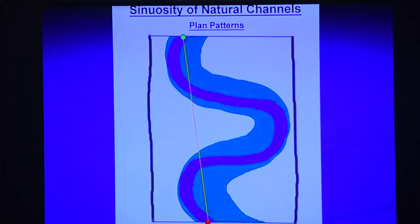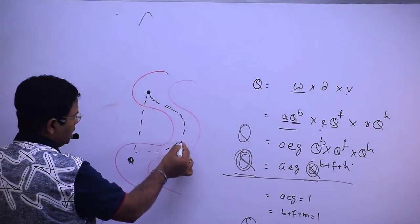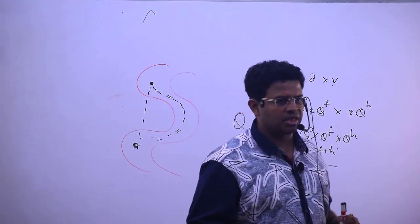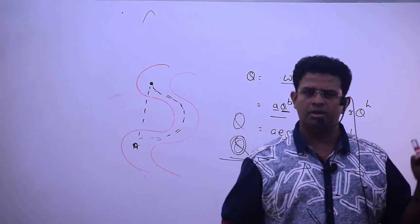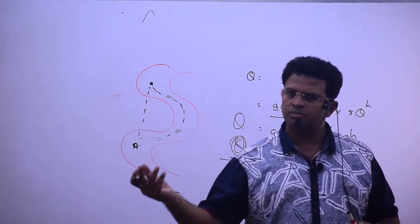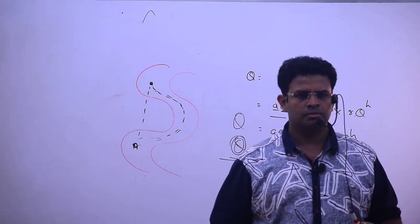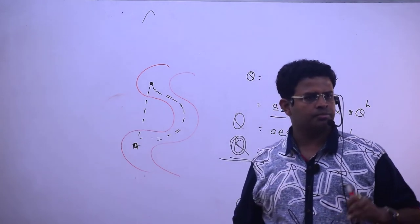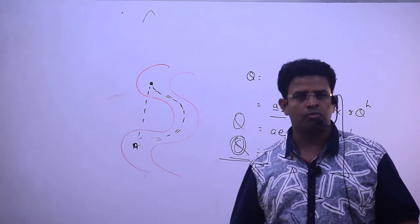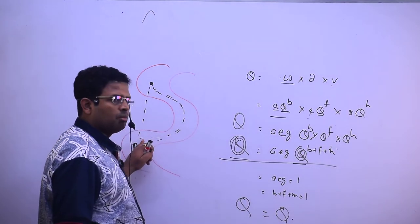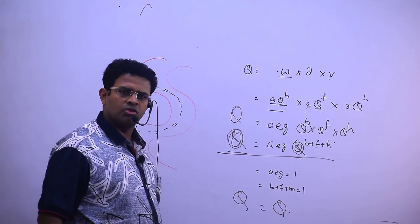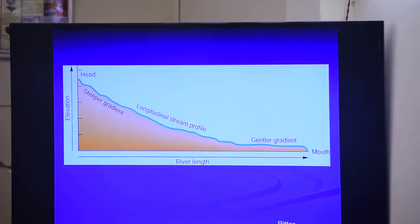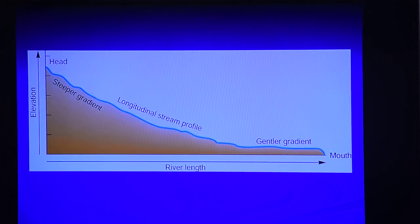Sinuosity is defined as channel length divided by valley length — that is, the length of the river from source to mouth measured along the channel, compared to the straight-line valley length. The channel length is always greater than the valley length, and this ratio gives sinuosity.